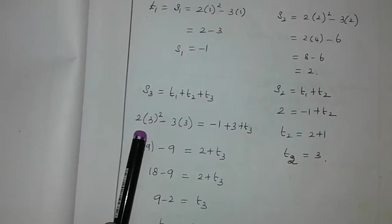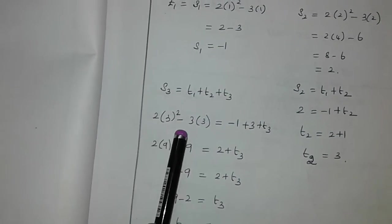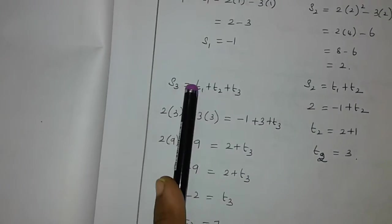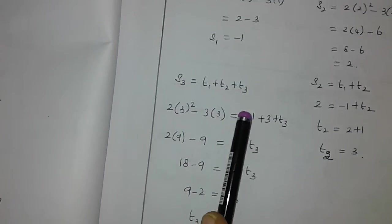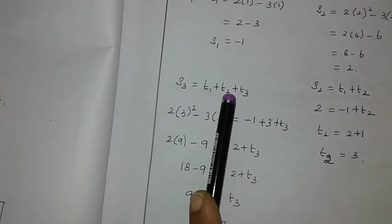When n is equal to 3, then S3 is 2 into 3 whole square minus 3 into 3. S3 is nothing but sum of the 3 terms. Then T1 is minus 1, T2 is 3.